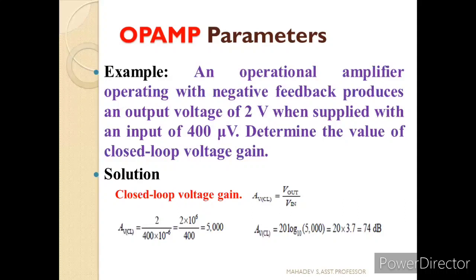Let us solve a problem related to gain. An operational amplifier operating with negative feedback produces an output voltage of 2 volts when supplied with an input of 400 microvolts. Since feedback is given, we determine the closed loop voltage gain. AV(CL) = Vout/VIN = 2 V / 400 μV = 5000, which converts to approximately 74 dB. So the closed loop voltage gain is 74 dB.